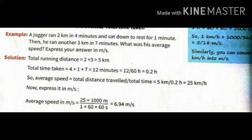5 km divided by 0.2 equals 25 km per hour. This is our average speed in km per hour. Now we have to convert it to meter per second. So we multiply 25 km by 1000 and divide by 3600, and we get the answer 6.94 meter per second.